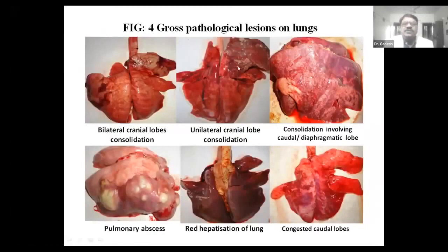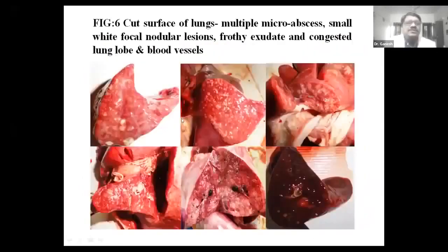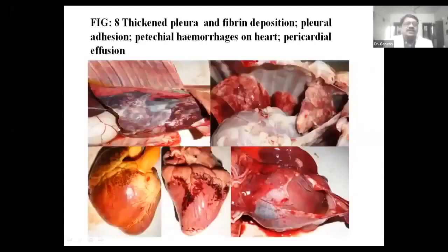Then there is unilateral pneumonia in the cranial lobe, and consolidation in the caudal lobes. Pulmonary abscesses you will also find. Sometimes you will find red hepatization of the lungs, and sometimes the entire lung will be congested. If you cut the lungs, you will find this type of micro-abscesses. Sometimes there are micro-nodules and white nodules also. Here you can find the nodules, and there is severe congestion and edema of the lung. You will also find pleural adhesions between the lungs, heart, and thoracic cavity due to pleuritis.